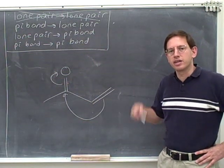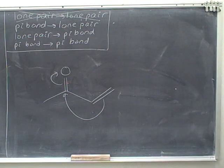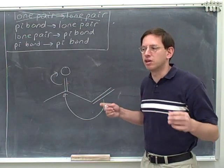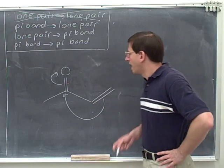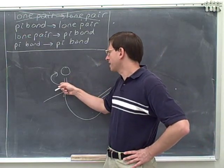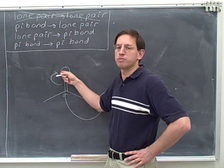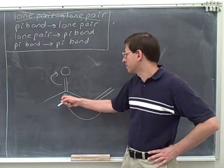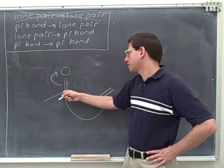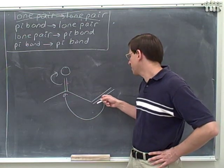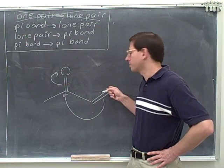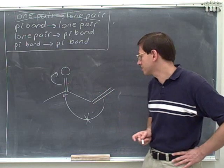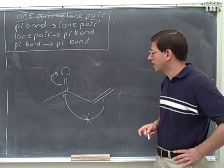Do these arrows satisfy the as close as possible rule? I hope you paused the video and tried the problem on your own. Well, this arrow is fine because we're taking a pi bond and making the lone pair as close as possible to the original pi bond — we're putting the lone pair on the oxygen. But this other arrow also indicates taking a pi bond and making a lone pair; the head is pointing directly at this carbon, but that carbon is not the closest possible place. The closest would be on this carbon or this carbon. So this violates the as close as possible rule and is not an arrow you'd want to draw.